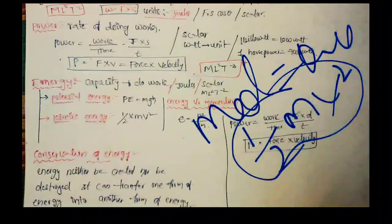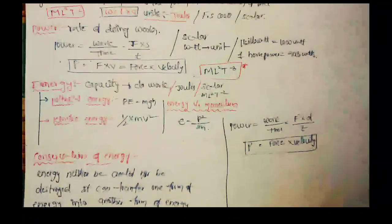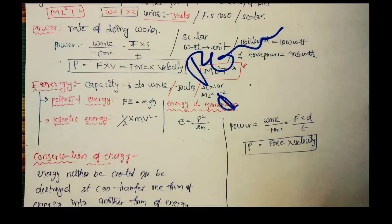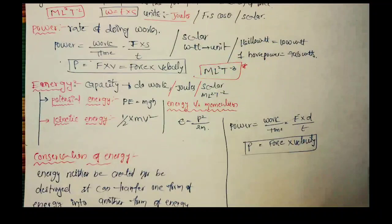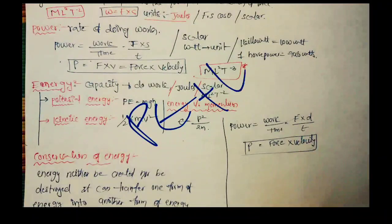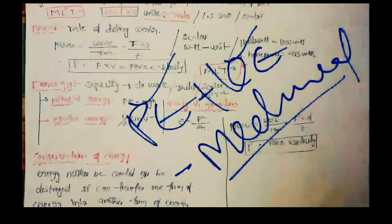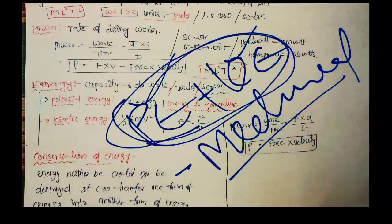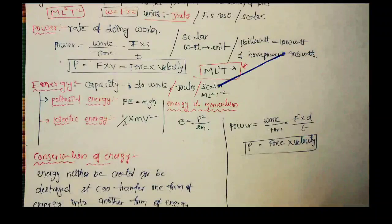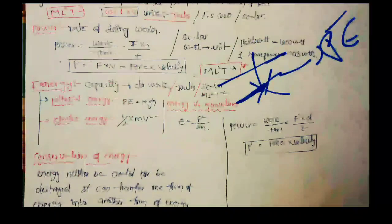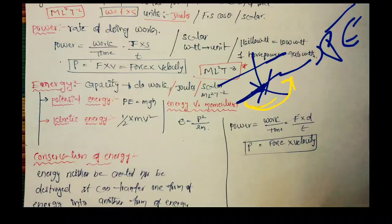So the formula for potential energy is PE = mgh and kinetic energy is KE = ½mv². We have mechanical energy, which is ME = PE + KE. Potential energy plus kinetic energy gives total mechanical energy.